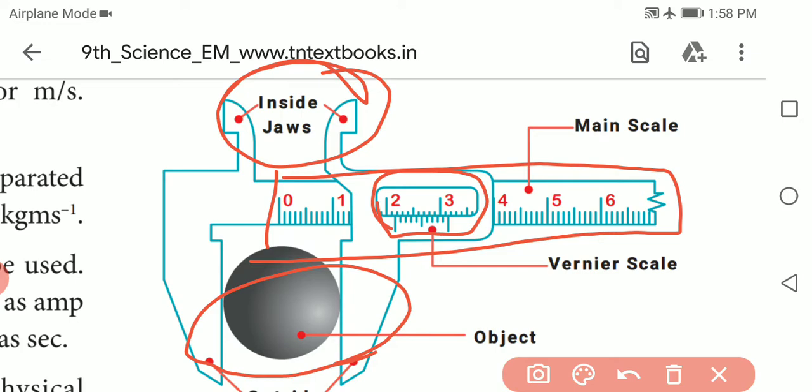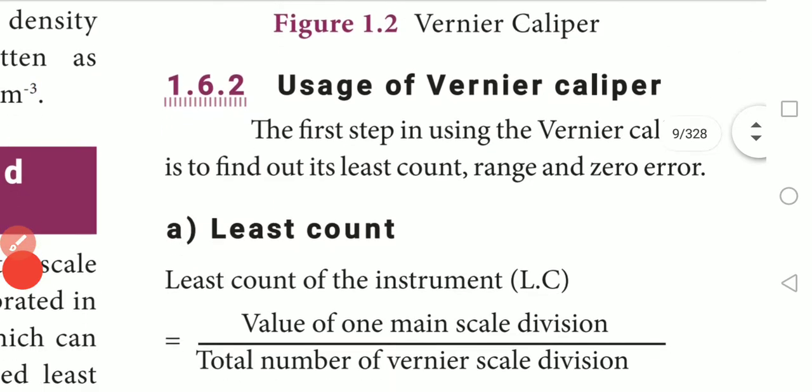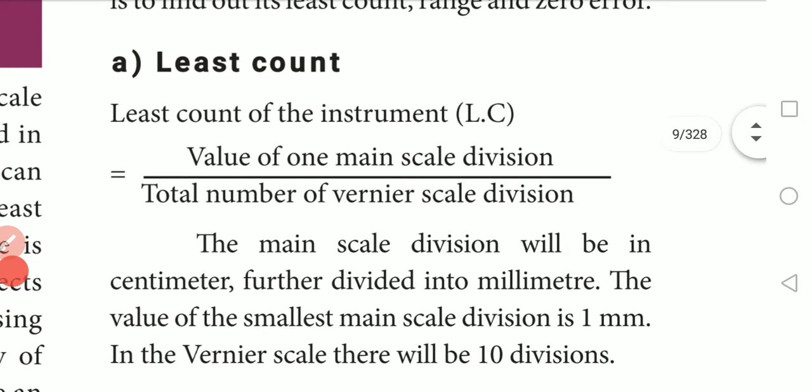The inside jaw is the upper jaw, used for measuring internal radius. The lower jaw is used to measure external radius. You use this vernier caliper to find the least count of the instrument.